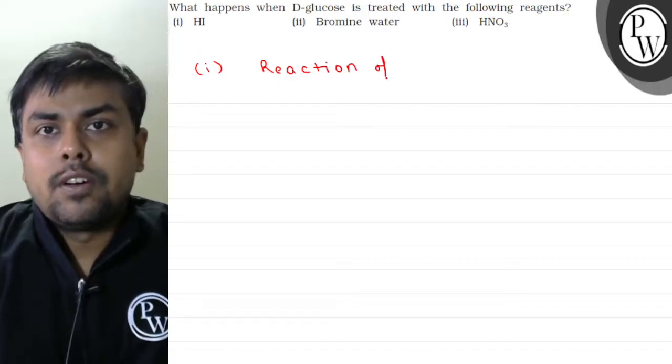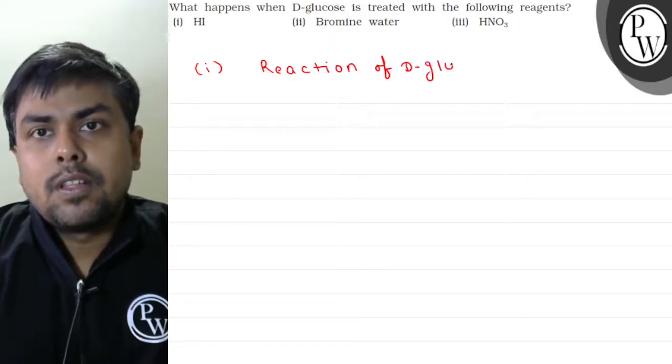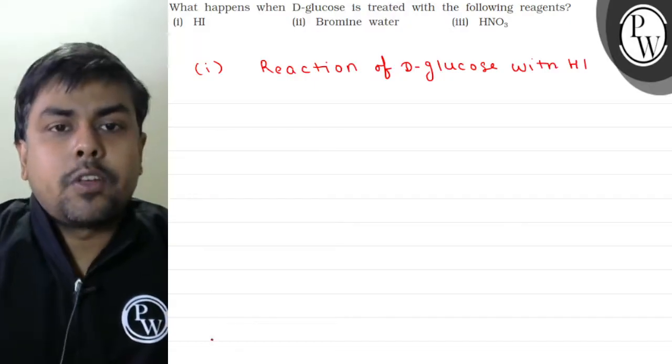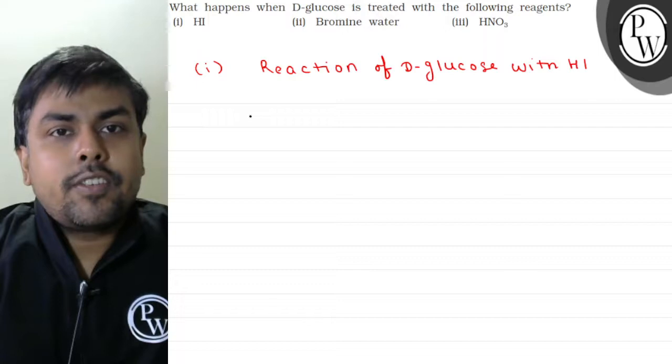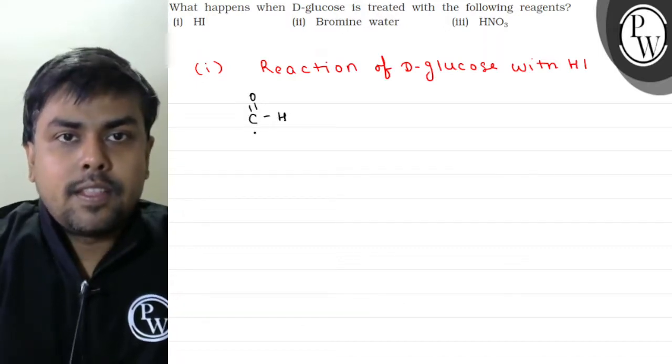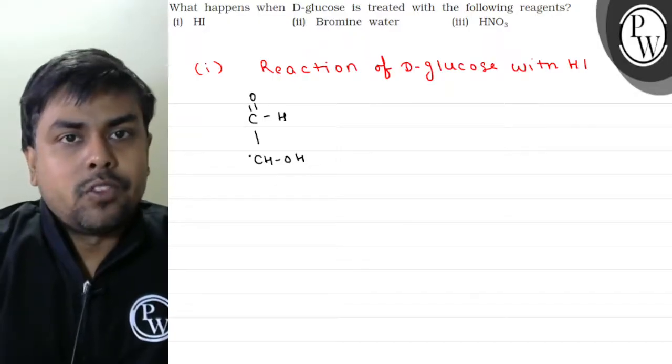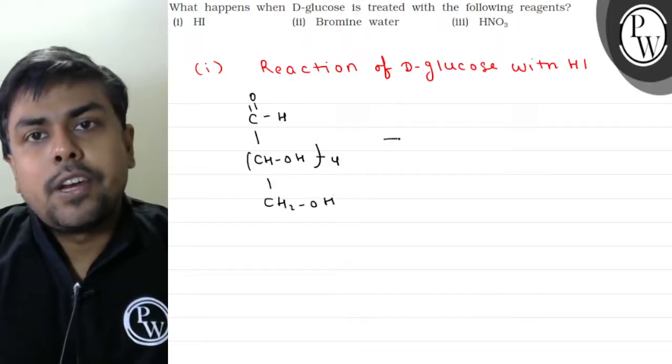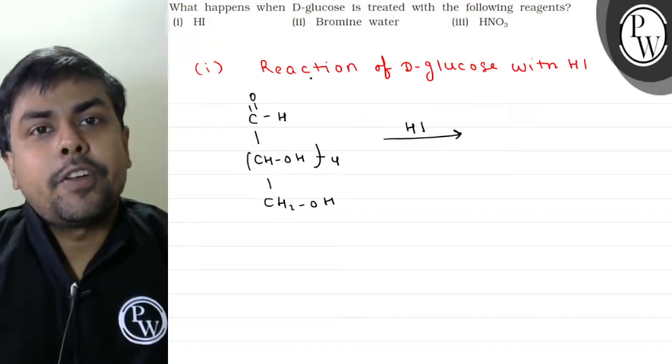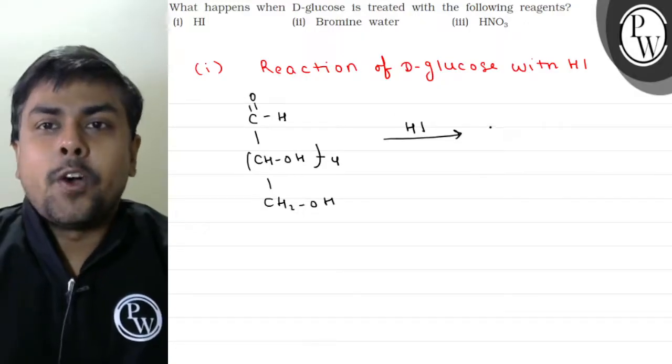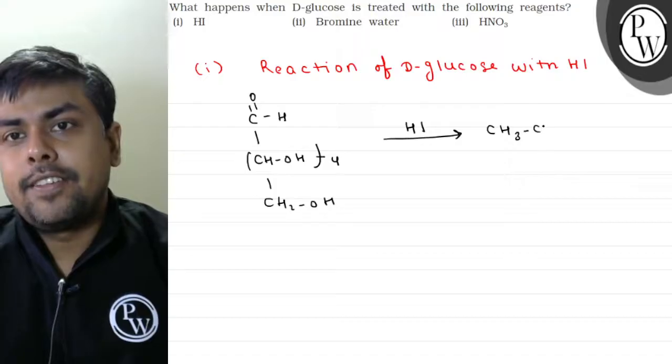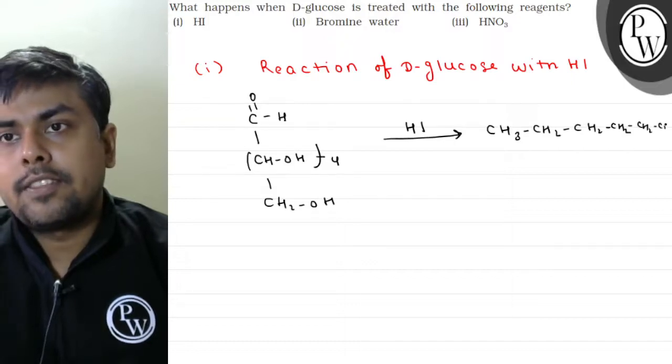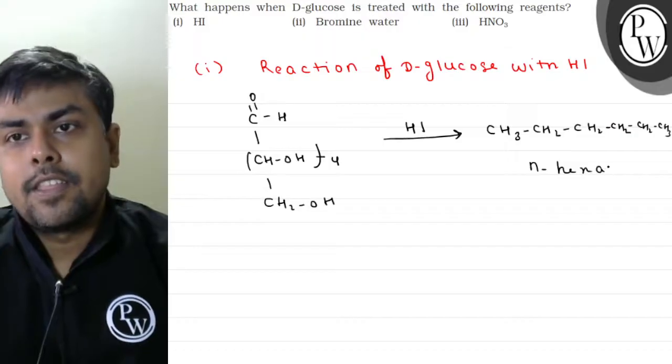Reaction of D-glucose with HI. I am having D-glucose structure: C=O, then CHOH 4 times, and then CH2OH. This will act as a reducing agent. What will it do? It will reduce the whole glucose into normal hexane. The product which I will get is CH2-CH2-CH2-CH2-CH3. This is n-hexane. This was my reaction.